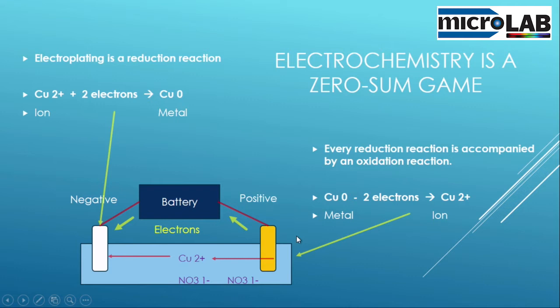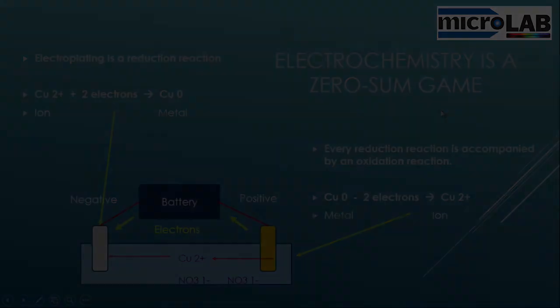The thing to note here is that electrochemistry, every electrochemical reaction is a zero-sum game. You have to have as many electrons accepted as given up. So we have to oxidize two electrons, we reduce with two electrons.